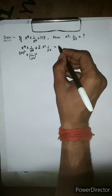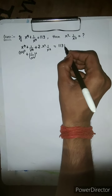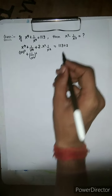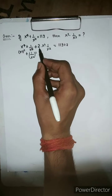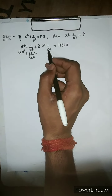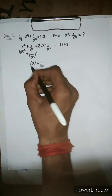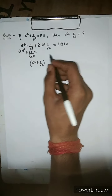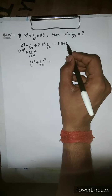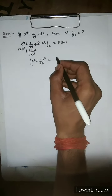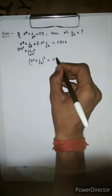Adding 2 to the right-hand side gives us 119 plus 2. We have x² raised to the power 2 as a², and 1/x² as b², with 2ab in between, so it becomes x² plus 1 over x² whole raised to the power 2. And 119 plus 2 equals 121, which is the square of 11.